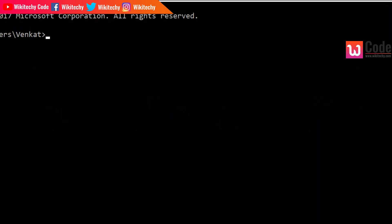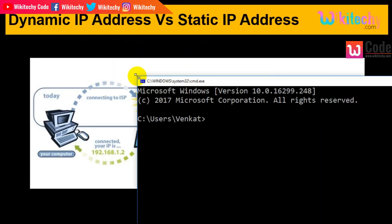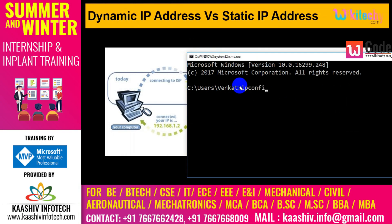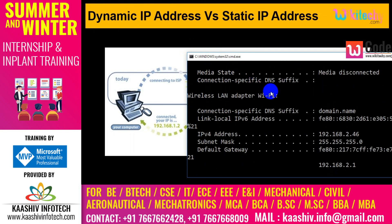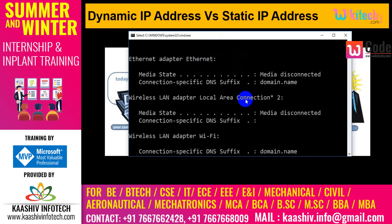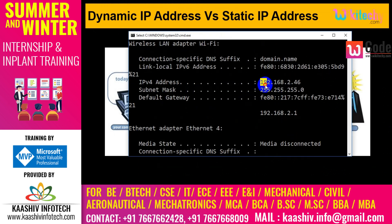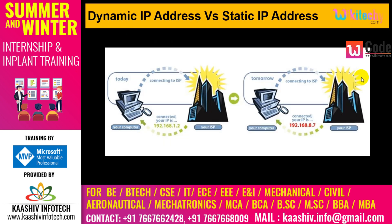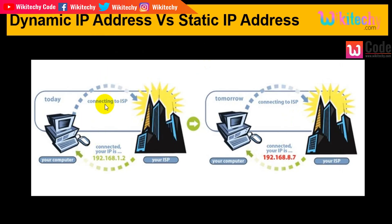Go to the command prompt. Over here I got my command prompt. I am giving the ipconfig command. By giving the ipconfig command, you are automatically able to see 192.168.2.46. This is called the dynamic IP address, where the IP address is changing every time.